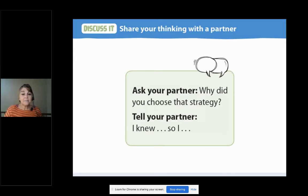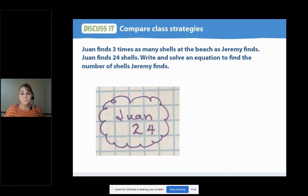All right, let's look at some other ways to solve the problem now. And as we go through them, maybe some of the ways are similar to the way you solved it. And maybe there's some different ways to think about it. So when I was looking at it, I read the problem. Juan finds three times as many shells at the beach as Jeremy finds. Juan finds 24 shells. Write and solve an equation to find the number of shells Jeremy finds. Well, I saw right there in the problem, it told me that Juan has 24 shells. That's known. So I wrote it down.